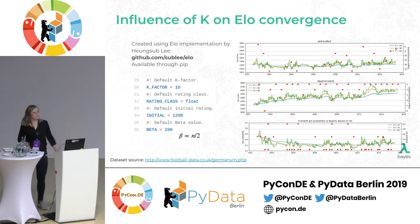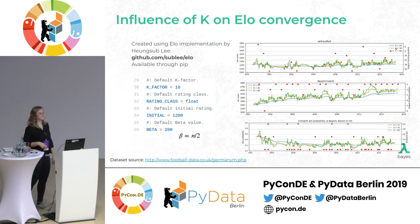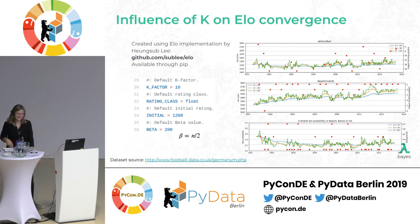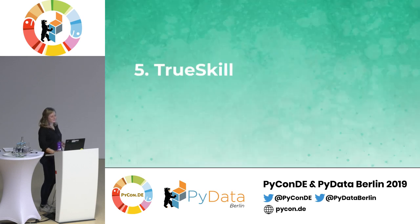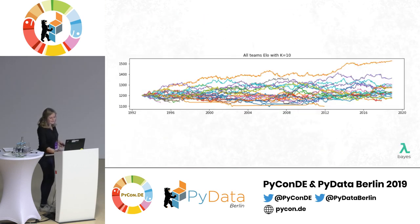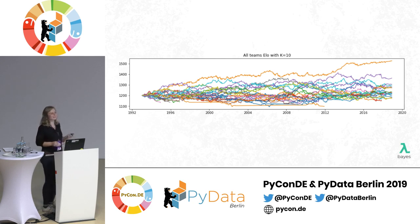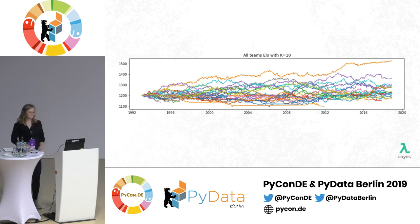Does anyone have an idea why the Bayern ratings increase very high around 2013 and then suddenly fall? Correct — because they were winning so many games in a row that their rating got really, really high. If you look at Bayern overall, they have this little drop — they lose one game and lose points due to the K behavior — but they're still very much outranking everybody else, even when Dortmund wins the league. Thank you very much, and a big applause for Darina.